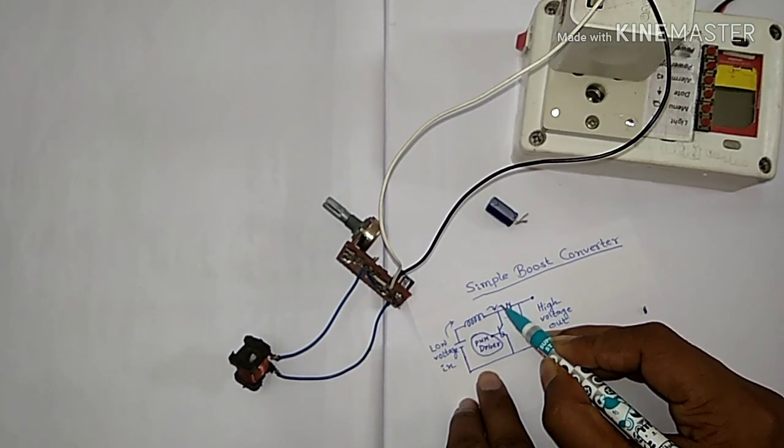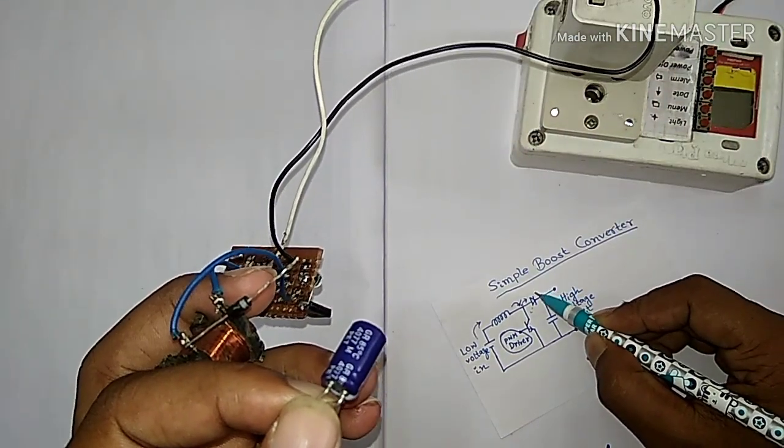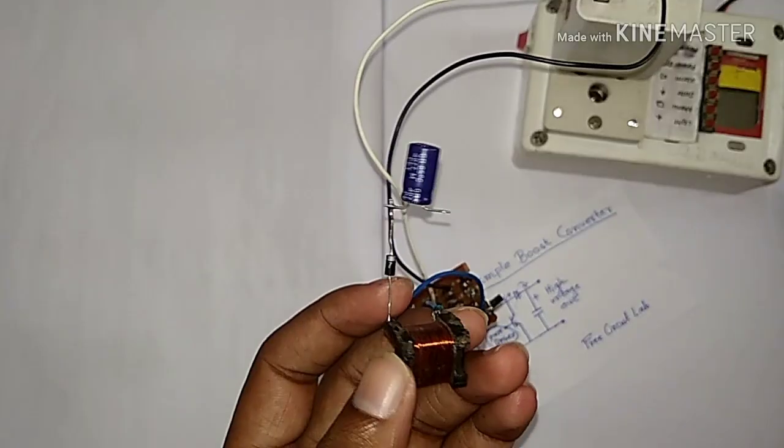And now it's time to connect the diode as the diagram like this. Now we have to connect the output capacitor as the diagram and done.